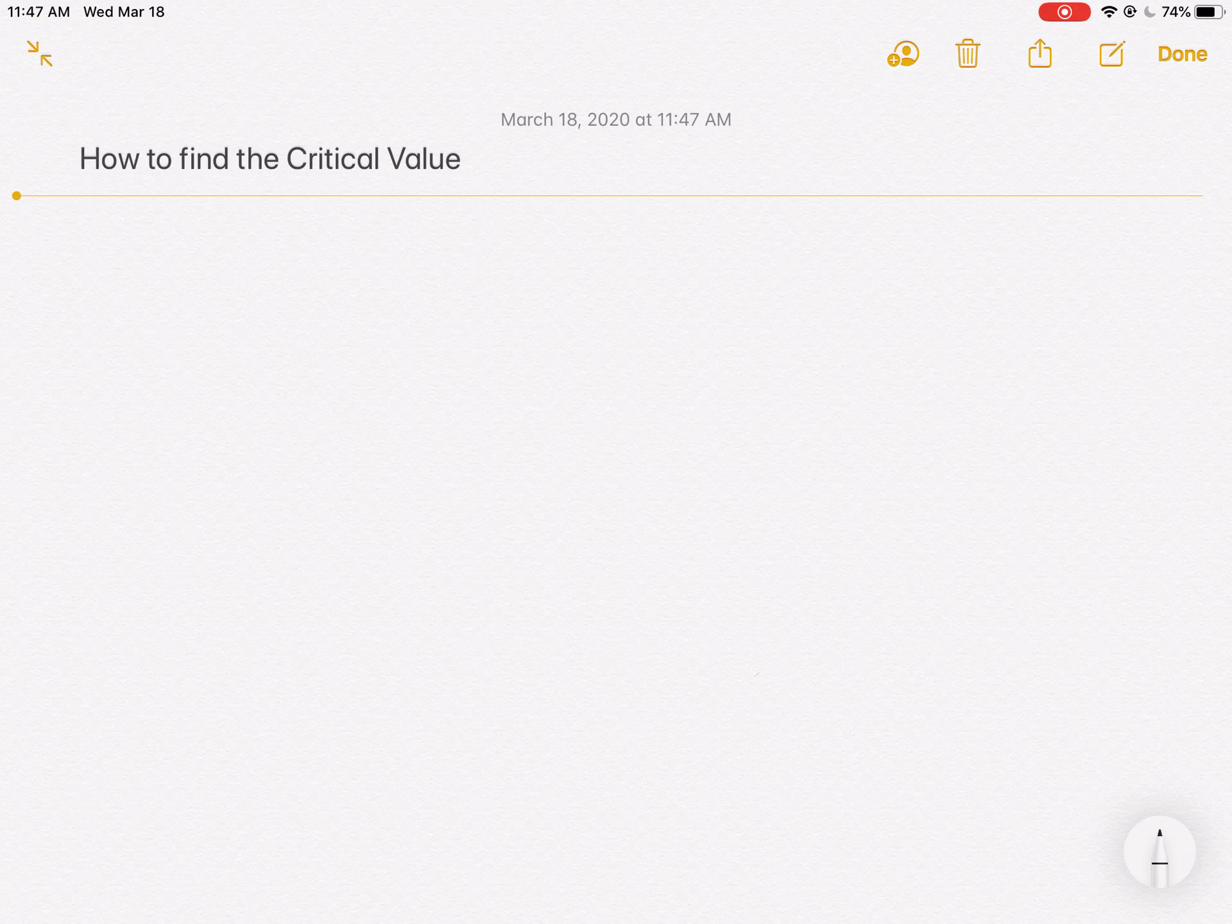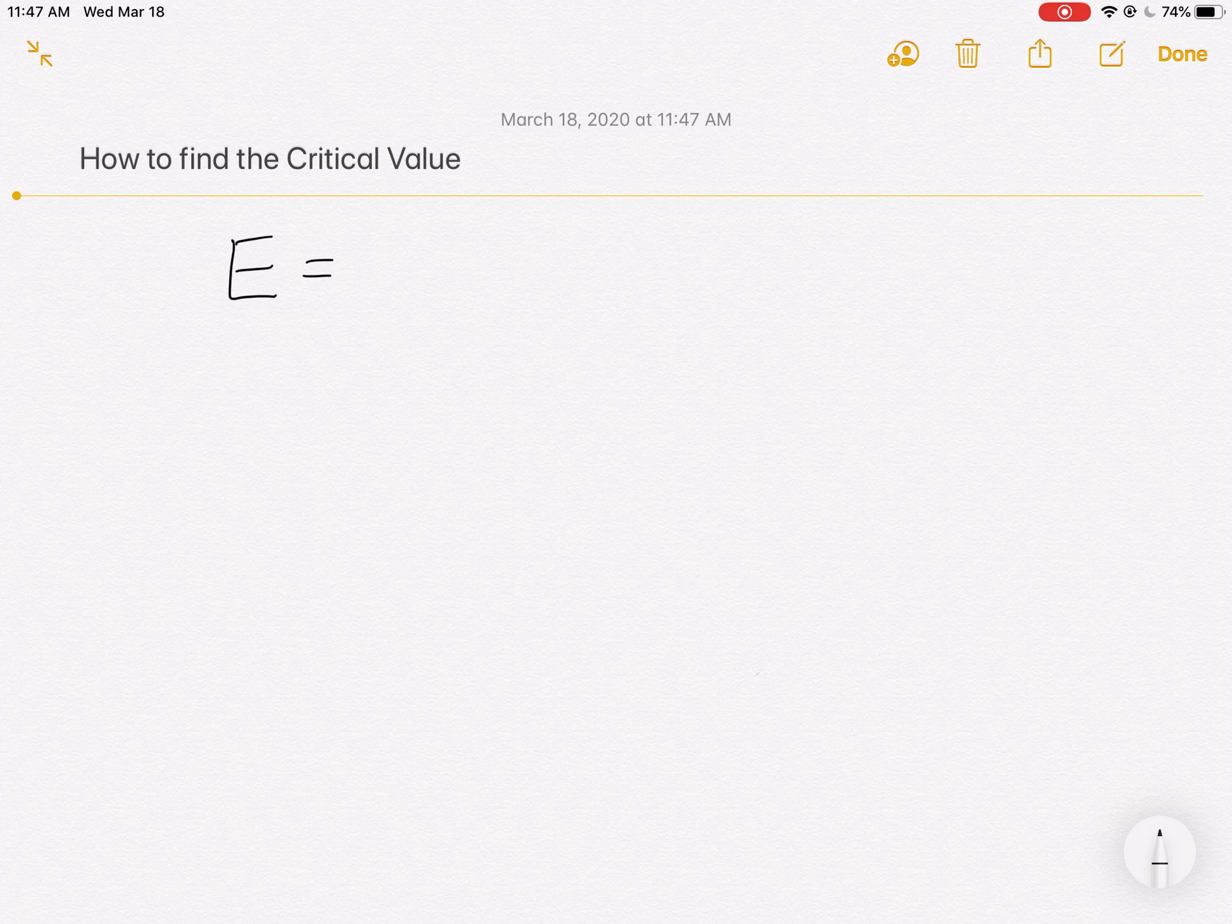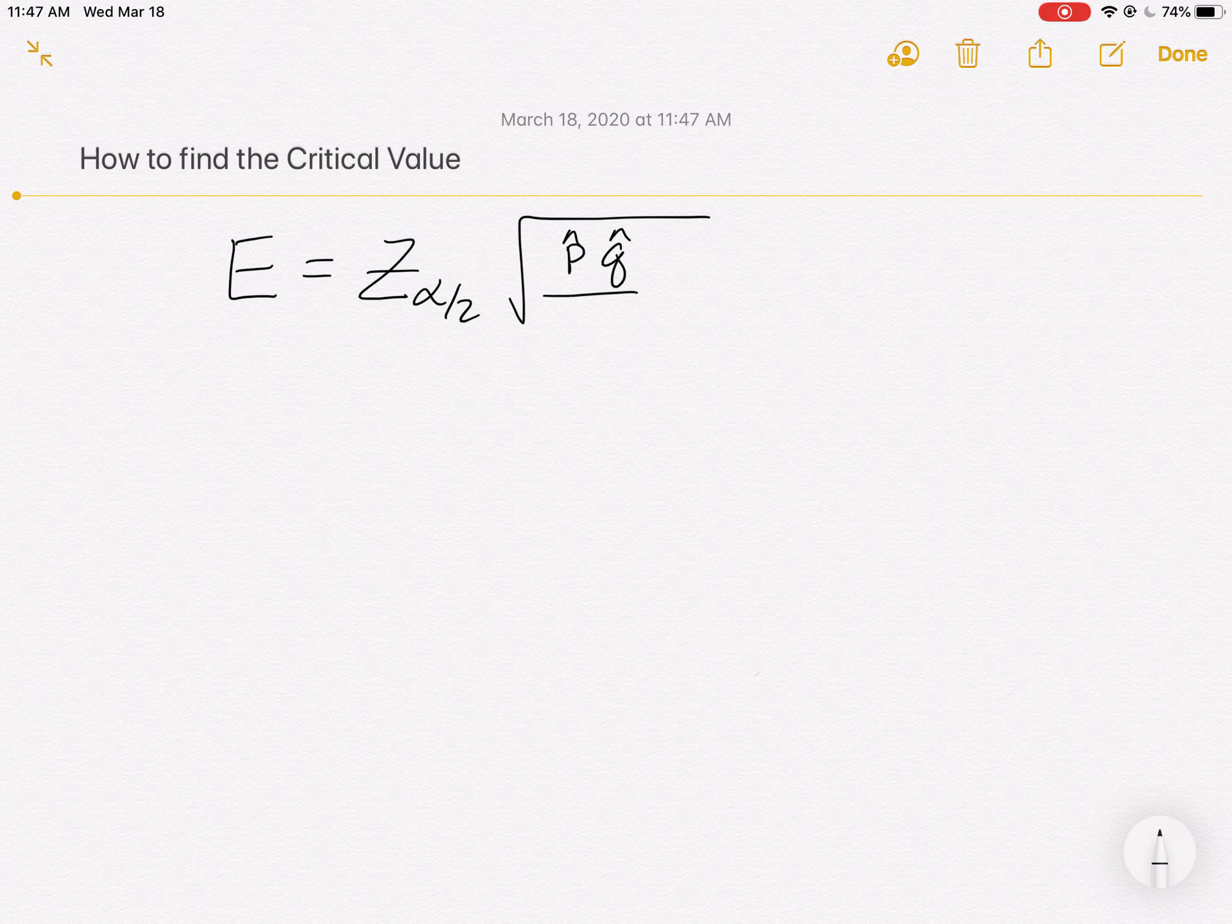Hopefully you're watching these videos in succession. In the first one we looked at the general concept of a confidence interval. Then I walked you through solving one for the proportion, and in that process we looked at a formula that had the error equaling z alpha over 2 square root of p hat q hat all over n.